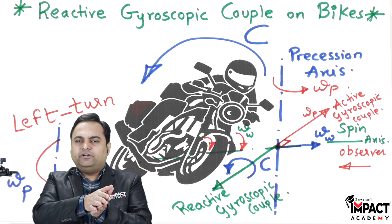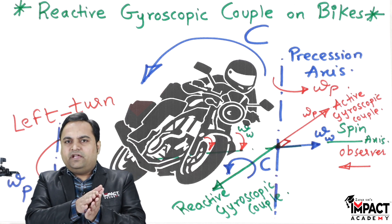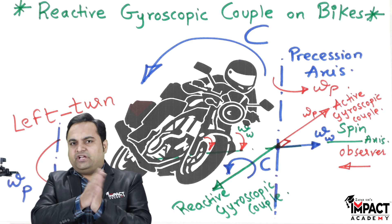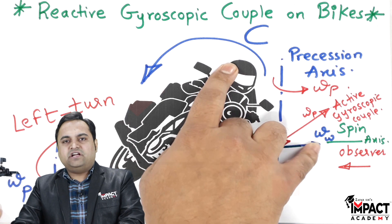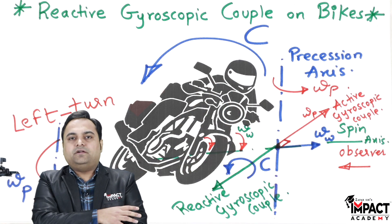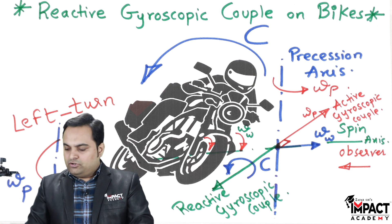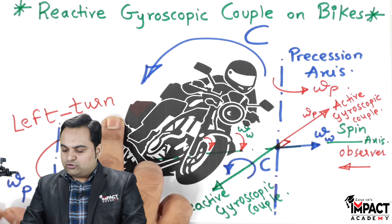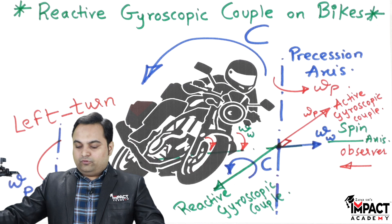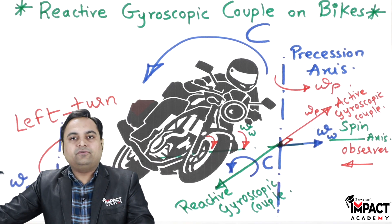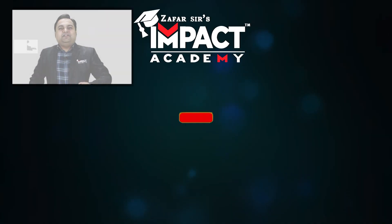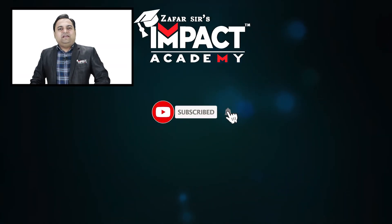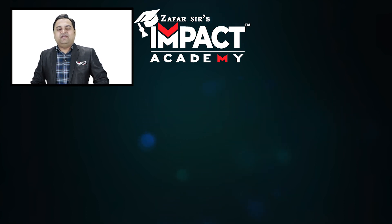That is why in racing bikes, whenever they are taking a turn, the biker tilts the bike at a particular angle — because if that angle changes, the reactive gyroscopic couple can throw the bike while taking the turn. That is the effect of the reactive gyroscopic couple while taking a left turn. If you find my videos helpful, please like, share, comment, and subscribe to the channel.